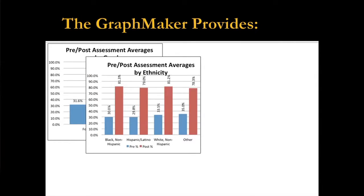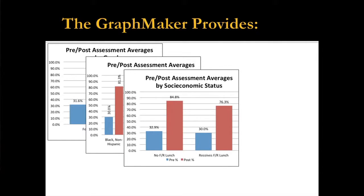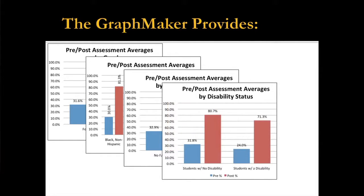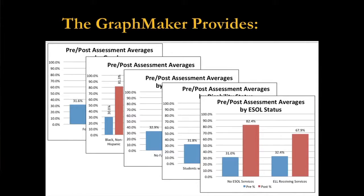By ethnicity — again, nothing to report. By free and reduced price lunch status, which is socio-economic status — that's pretty consistent with the research, so I probably won't explore that. But look at the growth shown by students with a disability. Because my undergraduate program was elementary and special ed, I expected to see that, so I'm going to talk about how that helps me meet the needs of students with exceptionalities. Your data doesn't lie — if I see that kind of growth for students with a disability but not for English language learners, that gives me my strengths and my areas to grow.